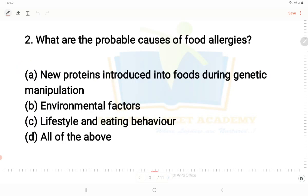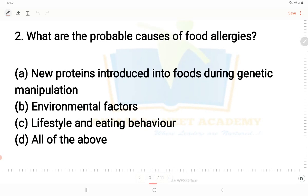Moving on to the next question: What are the probable causes of food allergies? The options include new proteins introduced into foods during genetic manipulation. This is definitely one of the points about food allergy causes - new proteins introduced through genetic manipulation of foods.